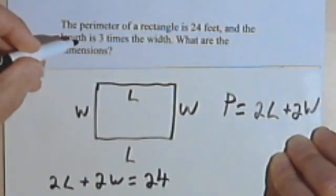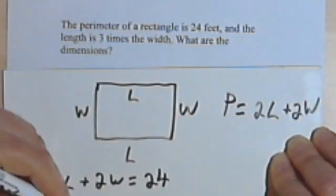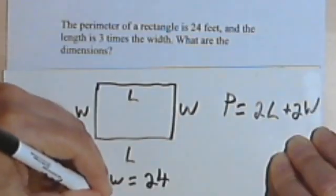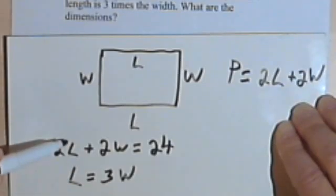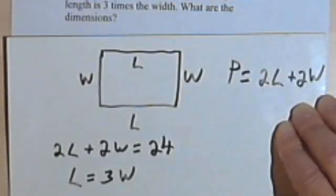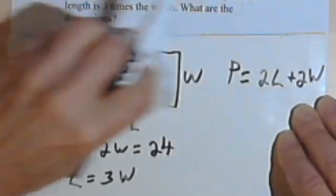And what else does it say? The length is 3 times the width. So if the length is 3 times the width, that means the length equals 3 times the width. Once again, I have two equations, two unknowns, so I have a system of equations. And it looks like this might be really nice to solve with substitution. Since we know that the L equals 3W, we would just put the 3W there. But again, you can solve this any way you want. The main thing is to get the right answer.